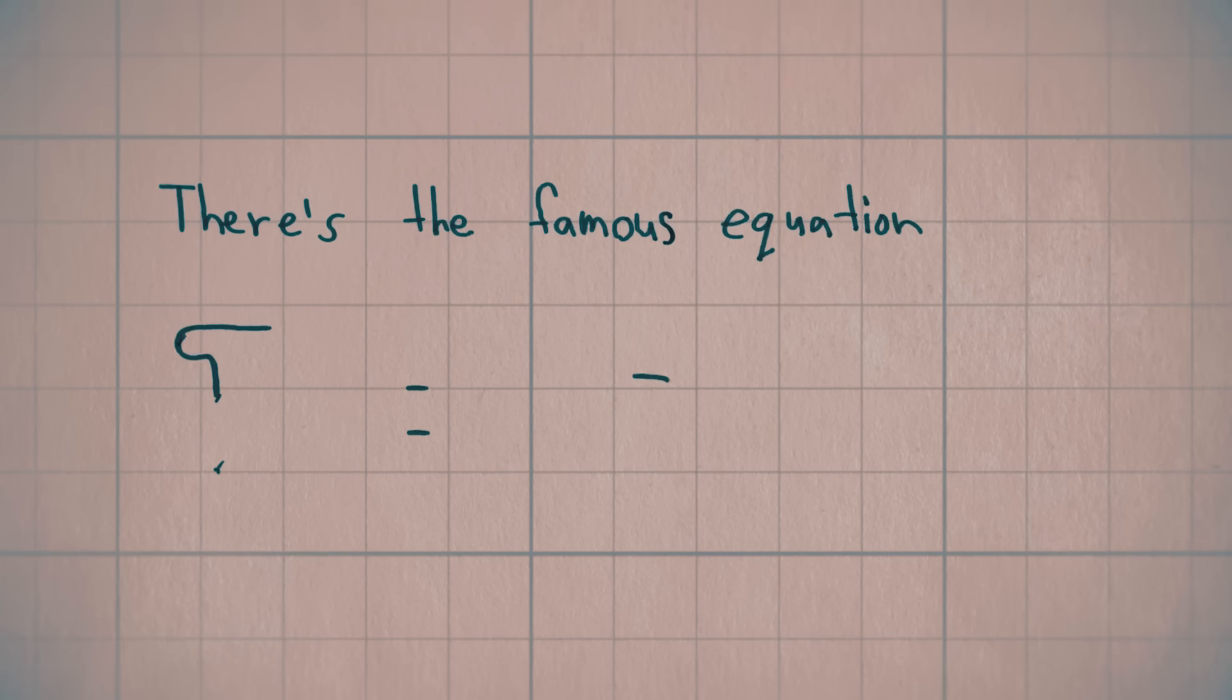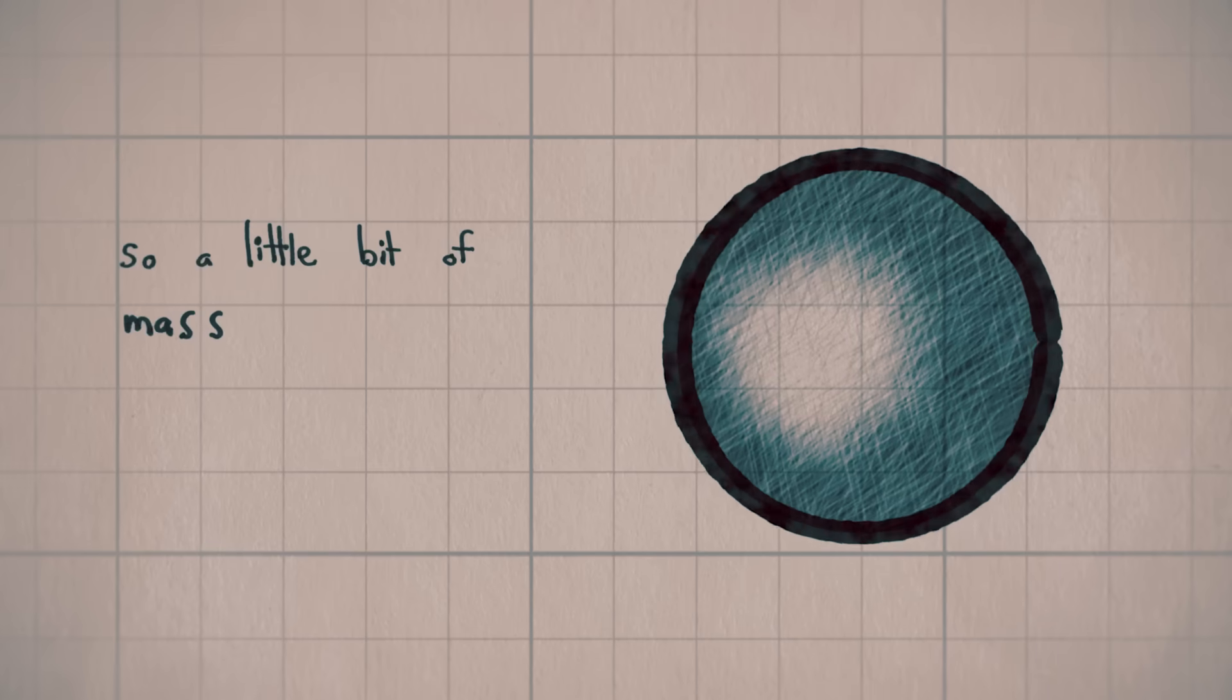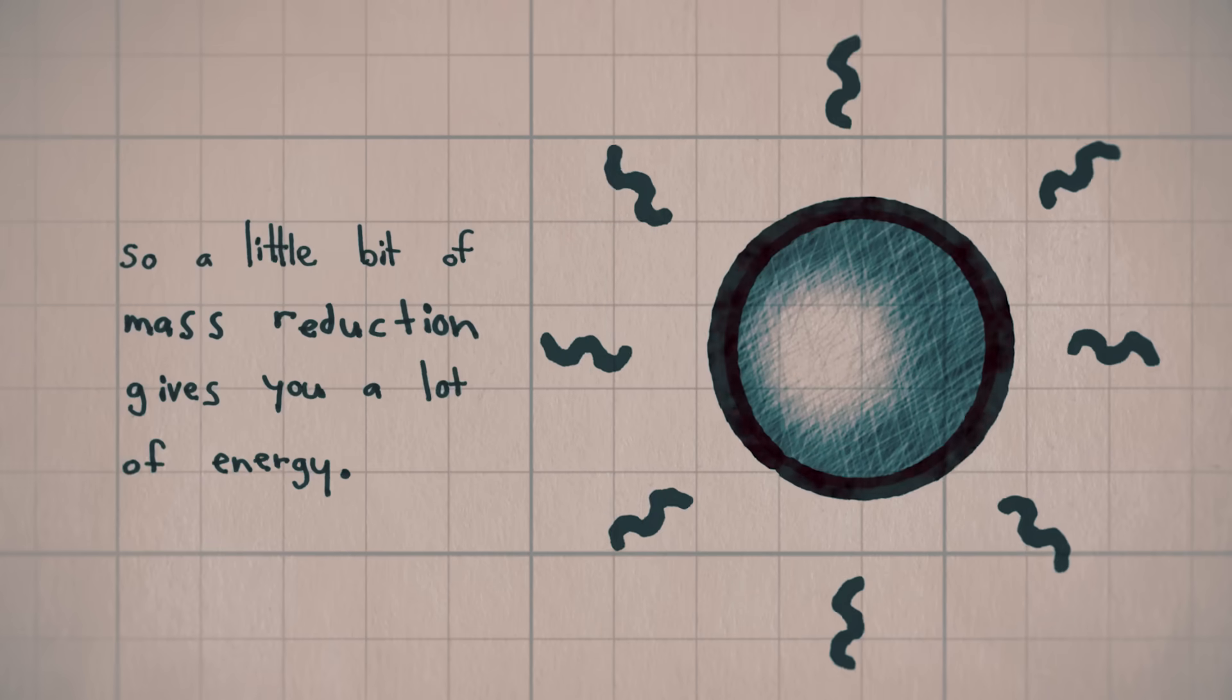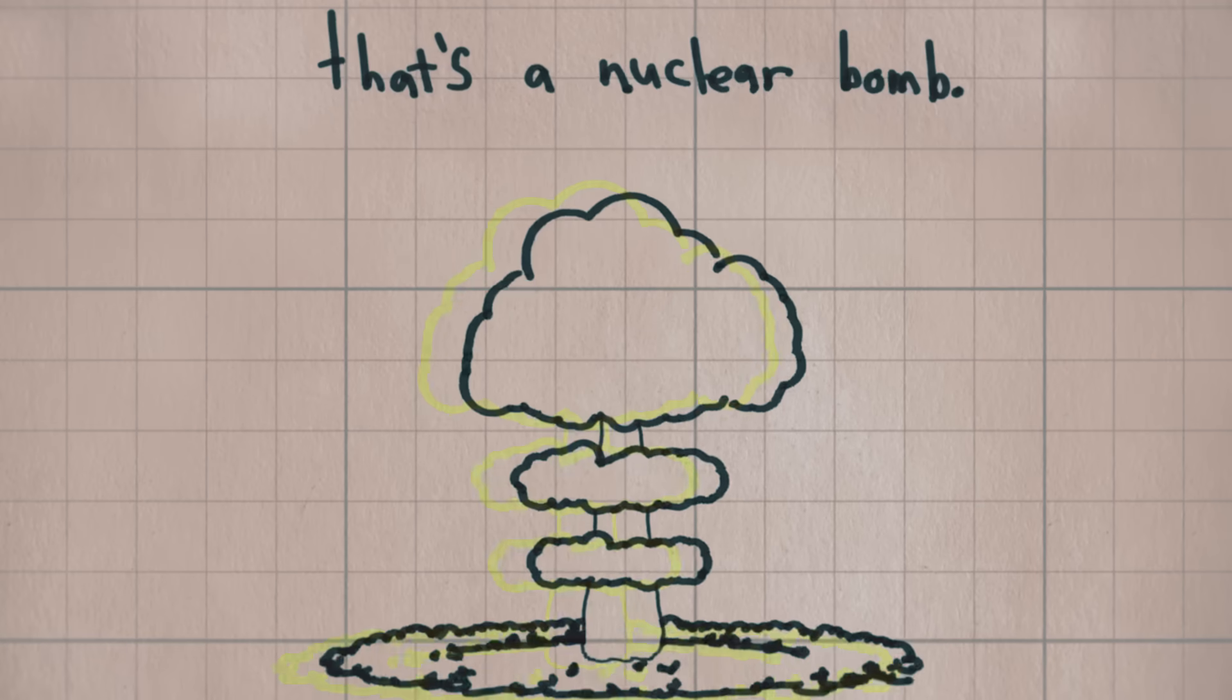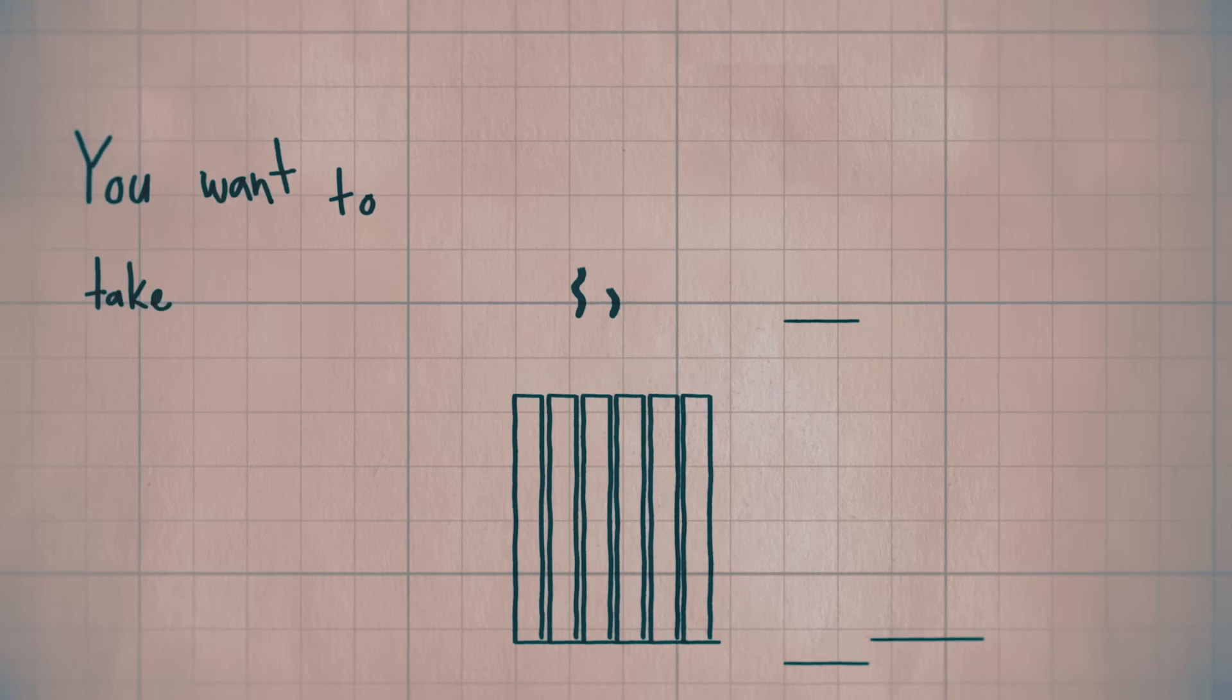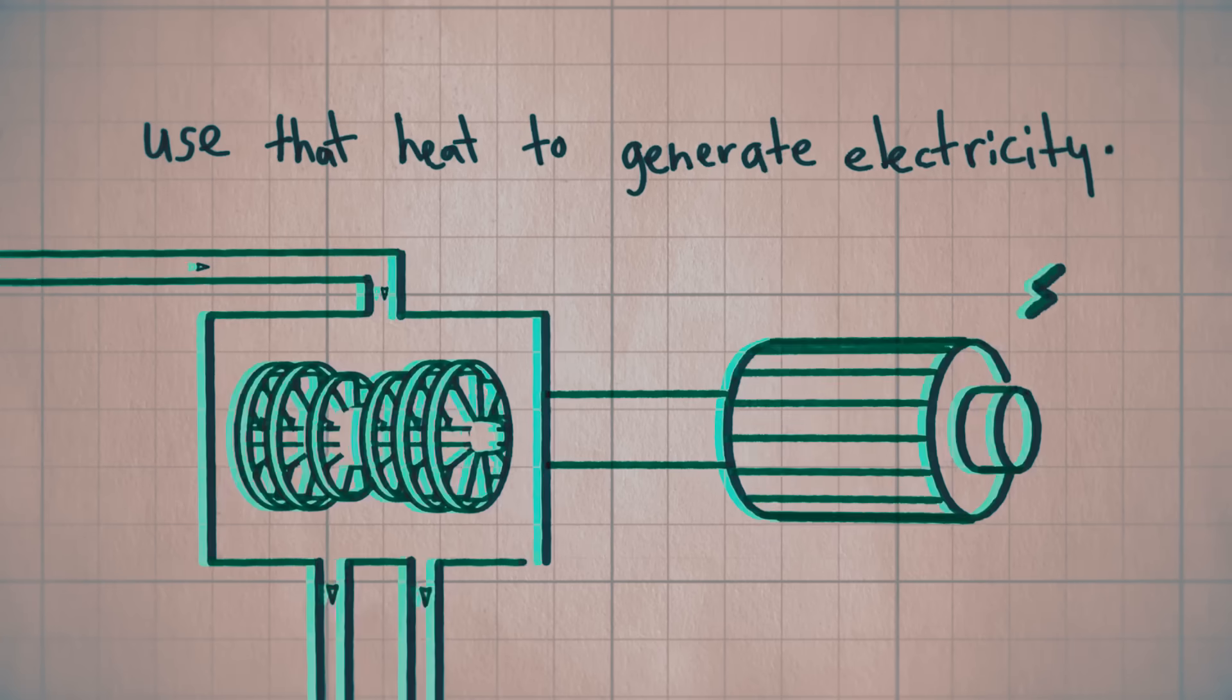There's the famous equation, energy equals mc squared. So a little bit of mass reduction gives you a lot of energy. If you do that very, very quickly, that's a nuclear bomb, so that's not good. You want to take the heat in a controlled way, use that heat to generate electricity.